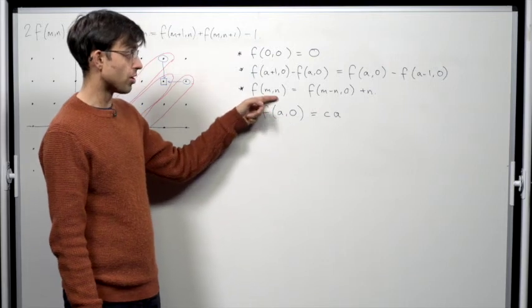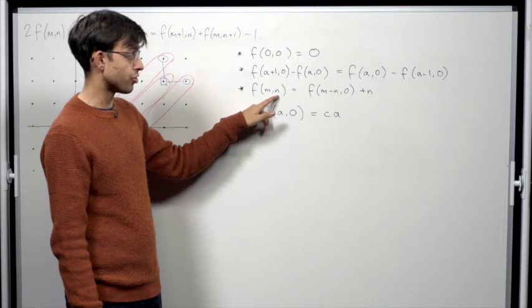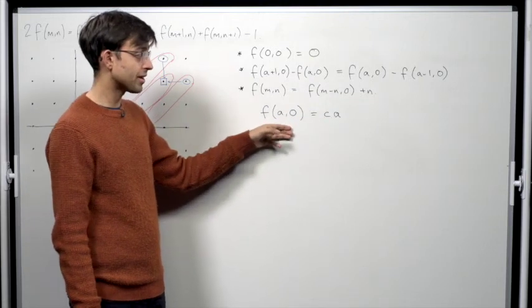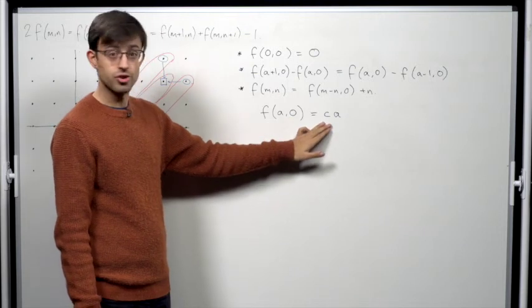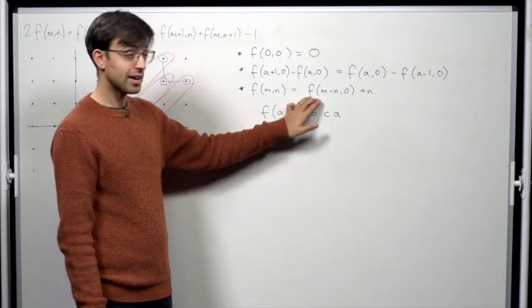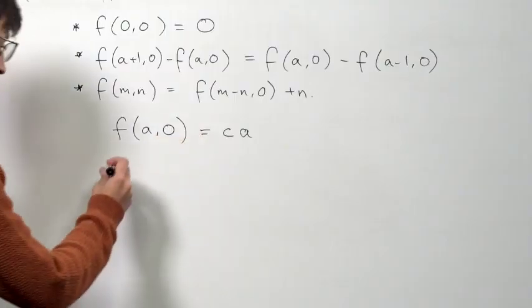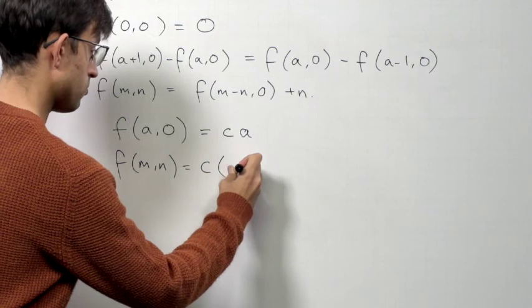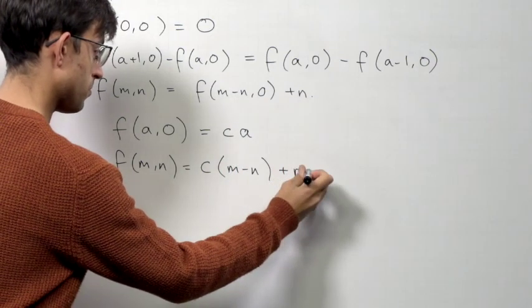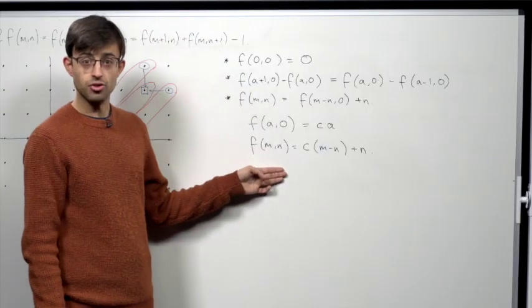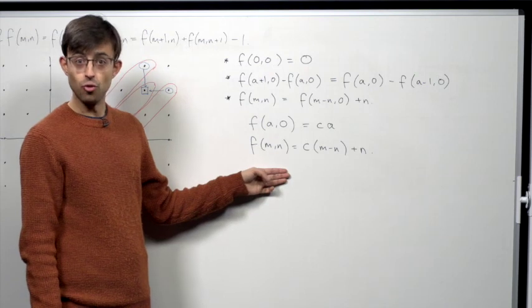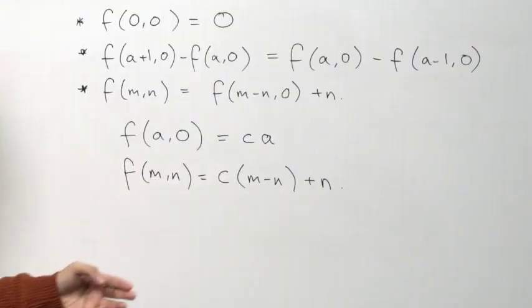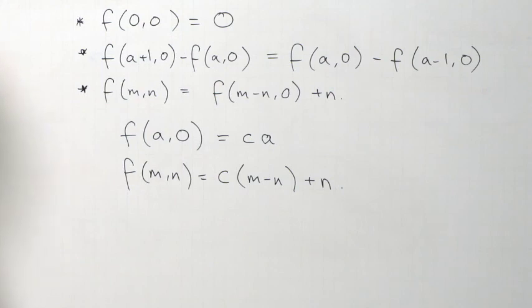Right, but remember our analysis of the red equation led us to the reduction of all values of f in terms of the values of f on the x-axis. So to complete the characterization, we just need to substitute our linear relation for the values along the x-axis back into our deduction from the red equation. So this is what we get. So this is our candidate for the form of the function. The only thing we need to do now is to check that functions that look like this actually satisfy the original equality we were given. And they do.